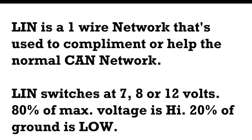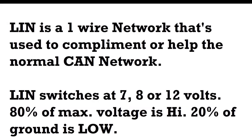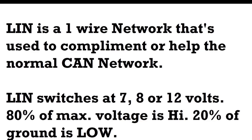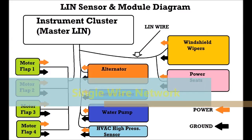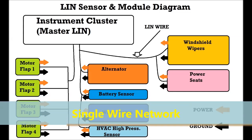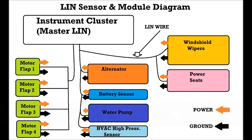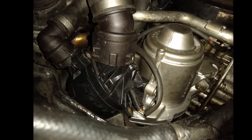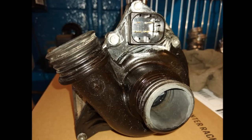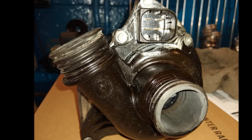To summarize: the LIN network uses one wire, it is cheaper than CAN, and it is used for components that are not critical or time-sensitive. Nothing in the engine will be LIN unless it's slow-acting, like the water pump — where you need to regulate speed — or the alternator, since those are not time-critical. If it's fast-acting, like injectors and coils, LIN has nothing to do with that.